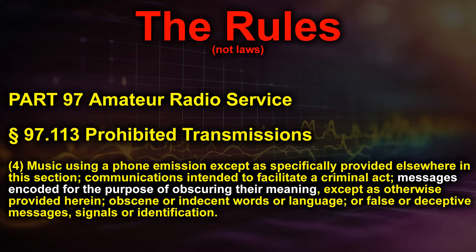And now that brings us to Part 97 — the amateur radio service. Some people are gonna throw a fit, but here we go. Under Part 97.113, Section 4, about halfway through, you see that messages and coding for the purpose of obscuring their meaning are part of the prohibited transmissions.